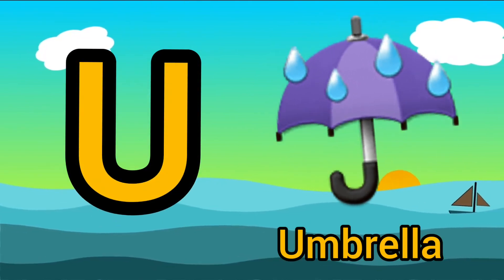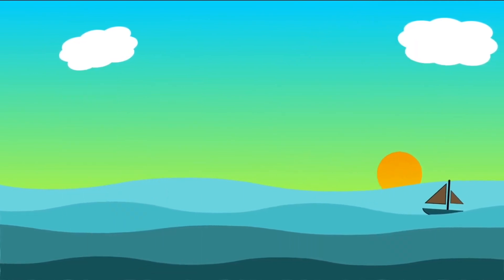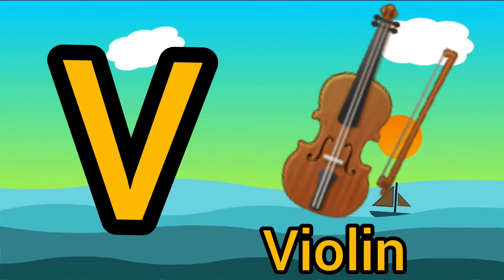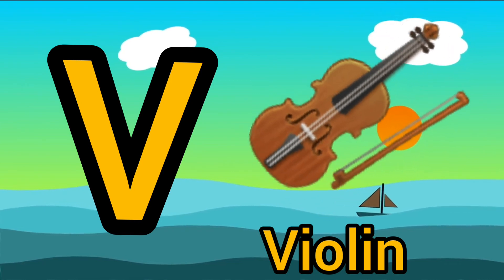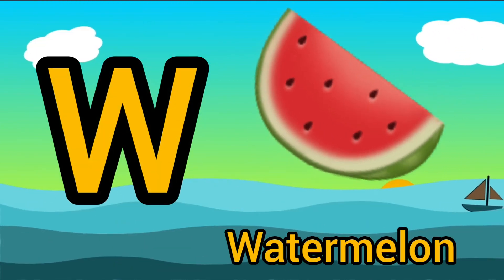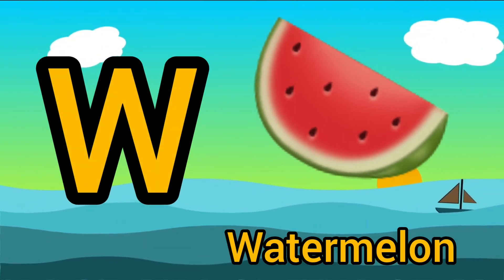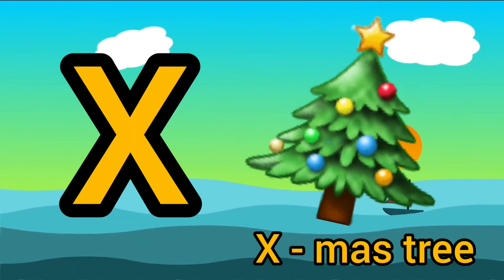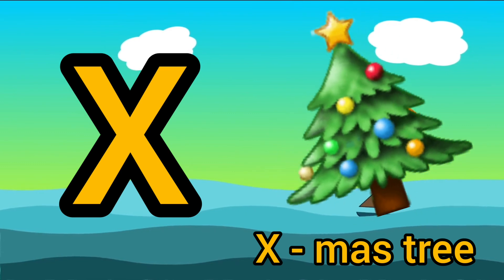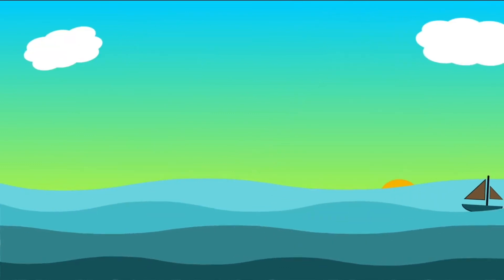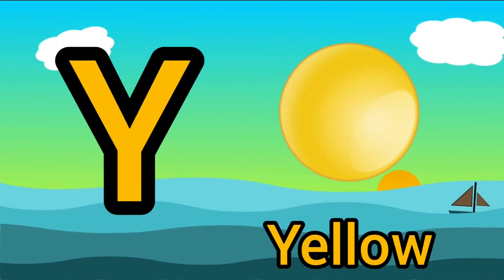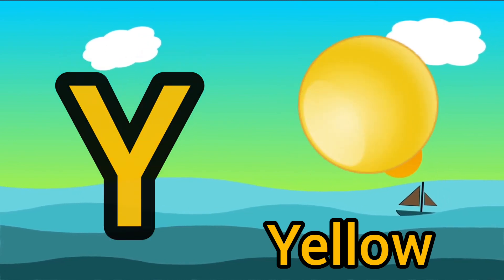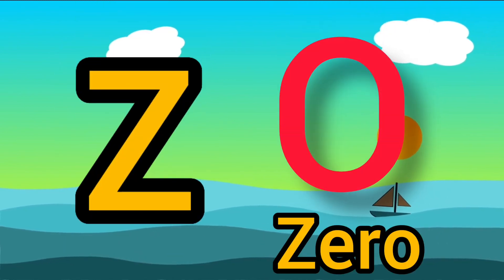U for Umbrella. V for Violin. W for Watermelon. X for Christmas Tree. Y for Yellow. Z for Zero.